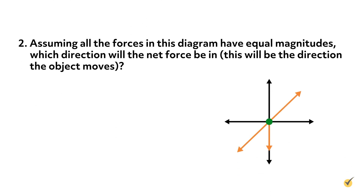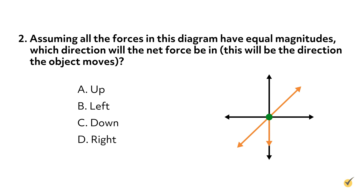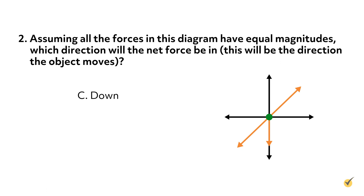Number two: assuming all the forces in this diagram have equal magnitudes, which direction will the net force be in? The correct answer is C. Since all of the force vectors have the same magnitude, the vector pointing up and to the right will exactly cancel out the vector pointing down and to the left. The only contributing vector is pointing downward — this is the only force the object will feel.